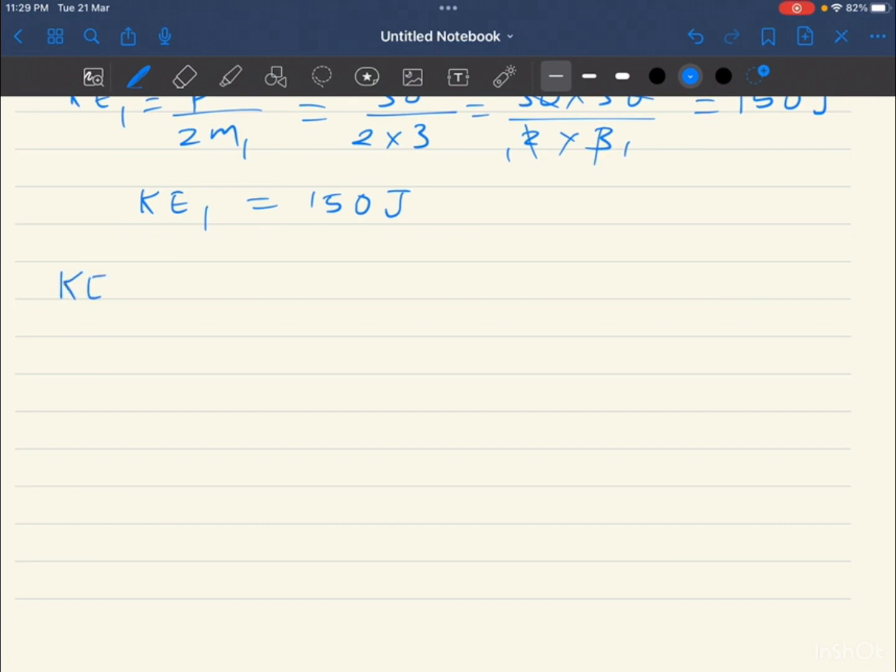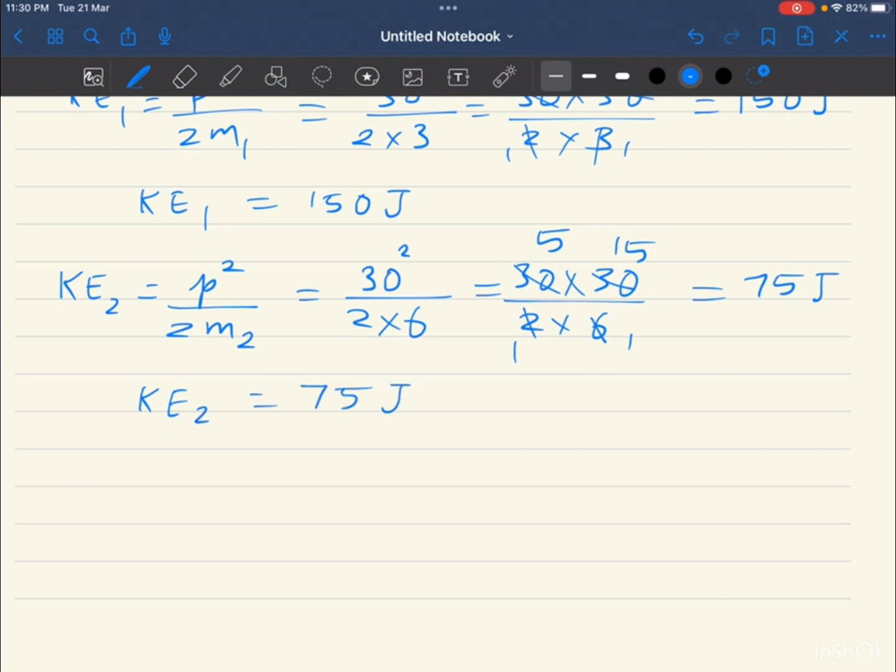Second kinetic energy. Kinetic energy 2 equal to, that is formula P square by 2 m2. Equal to P square 30 square by 2 into 6. Equal to 30 into 30 divided by 2 into 6. 6 table 1 time, 6 table 5 times, 2 table 1 time, 2 table 15. So 2 multiply, 75. So kinetic energy 2 equal to 75 joules.